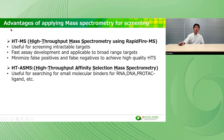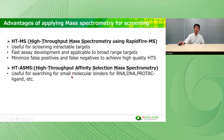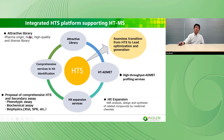We have introduced the advantages of applying mass spectrometry for screening. High-throughput HT-MS is a useful screening approach for intractable targets, with faster assay development and applicability to a broad range of targets. HT-ASMS is also useful for searching for small molecule binders for RNA, DNA, and other challenging targets. We will further support you using our integrated HT-ASMS platform.